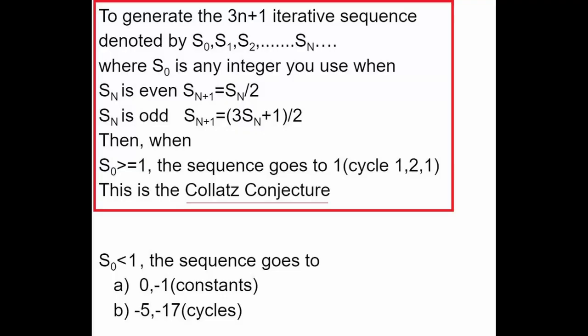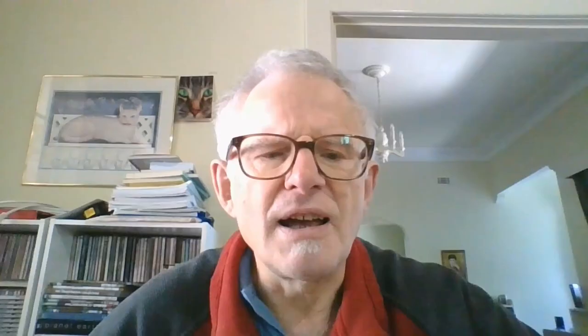To generate the 3N plus 1 iterative sequence, denoted by S0, S1, S2, all the way to SN, where S0 is any integer: when SN is even, SN+1 equals SN divided by 2; and when SN is odd, SN+1 equals 3SN plus 1 divided by 2. Then when S0 is greater than or equal to 1, the sequence goes to 1 — the trivial cycle 1, 2, 1, 2 — and this is the Collatz Conjecture.